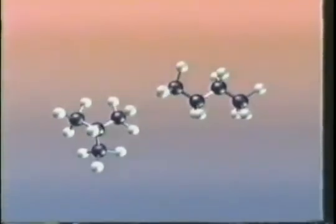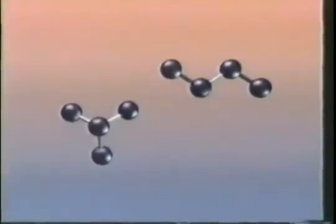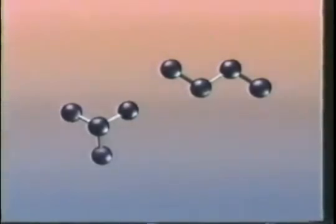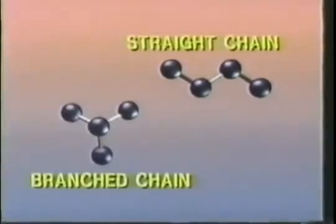We'll now convert these formulas into ball and stick models. These two structures are N-butane and isobutane. Let's lose the hydrogens so we can focus on the alignment of the carbon bonds. The carbon spine of N-butane is called a straight chain, while the bonding arrangement of isobutane is called a branched chain.